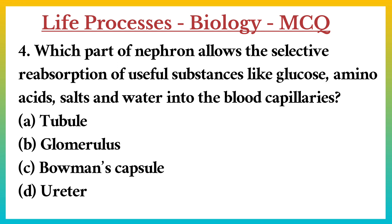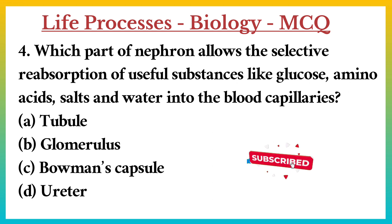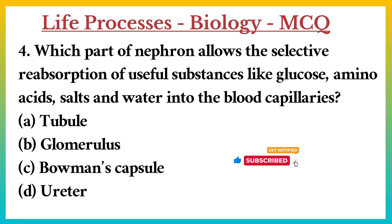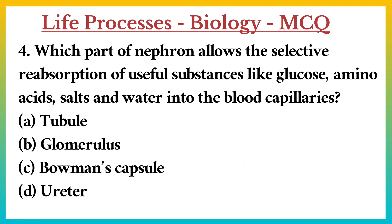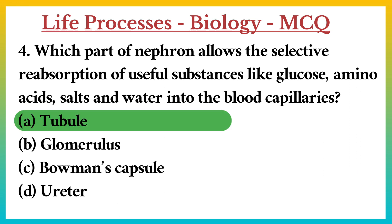Question number 4. Which part of nephron allows the selective reabsorption of useful substances like glucose, amino acids, salts and water into the blood capillaries? A. Tubule. B. Glomerulus. C. Bowmann's capsule. D. Urethra. Answer: A. Tubule.